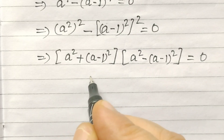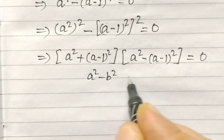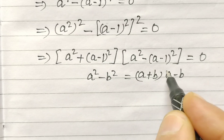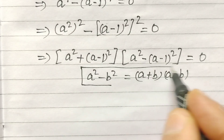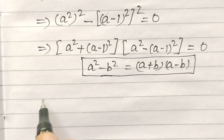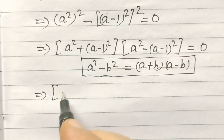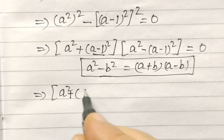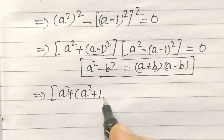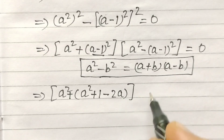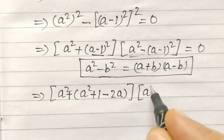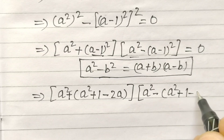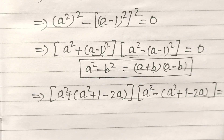As we know, A² minus B² equals (A+B)(A−B). We now express (A−1)² as A² + 1 − 2A. So the second factor becomes A² minus (A² + 1 − 2A).